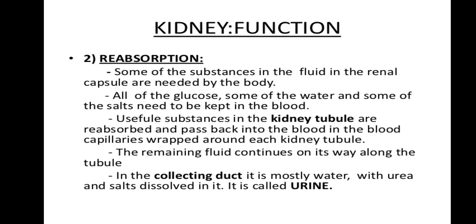To summarize the functions of nephron parts: in the glomerulus, filtration occurs; in PCT, reabsorption of iron, water, and nutrients takes place and pH is maintained; in the loop of Henle, sodium and chloride ions are filtered into the interstitial fluid; in DCT, selective secretion occurs. The collecting duct reabsorbs some solutes and water from the filtrate, and concentrated urine moves to the ureter. Urine composition is 96% water, 2% urea, and 2% uric acid, chloride, sulfate, and other substances.